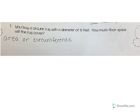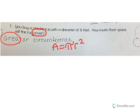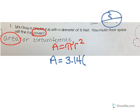You buy a circular rug with a diameter of 8 feet. How much floor space will the rug cover? Well, first of all, am I talking about area or circumference? It's talking about how much will the rug cover — that lets me know I'm talking about area. So my formula is area equals πr². I need to plug things in: area equals 3.14 times my radius squared. Is my radius 8? No — my diameter is 8, so my radius has to be half of that.